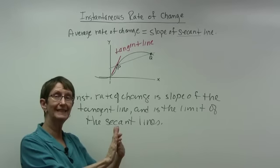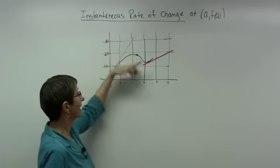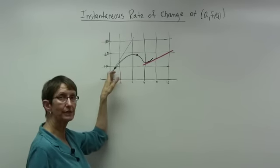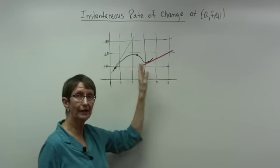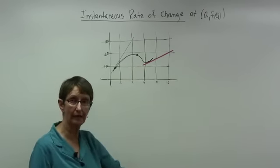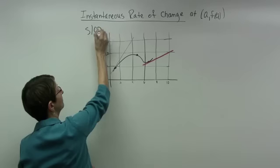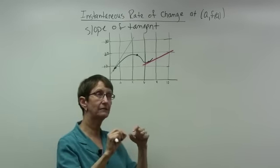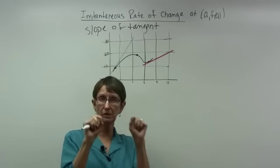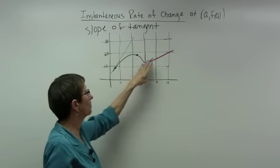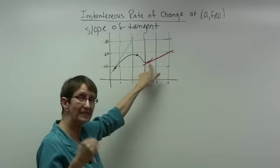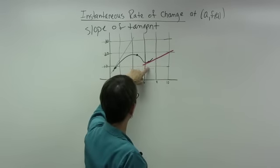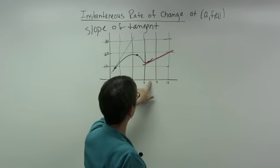The rate of change at a particular point is the instantaneous rate of change. We'll look at tangent lines at two different points and find the instantaneous rate of change. Because we want the instantaneous rate of change at a point, that will be the slope of the tangent line. We use the point of tangency, point A with coordinates (a, f(a)), as one of our points.